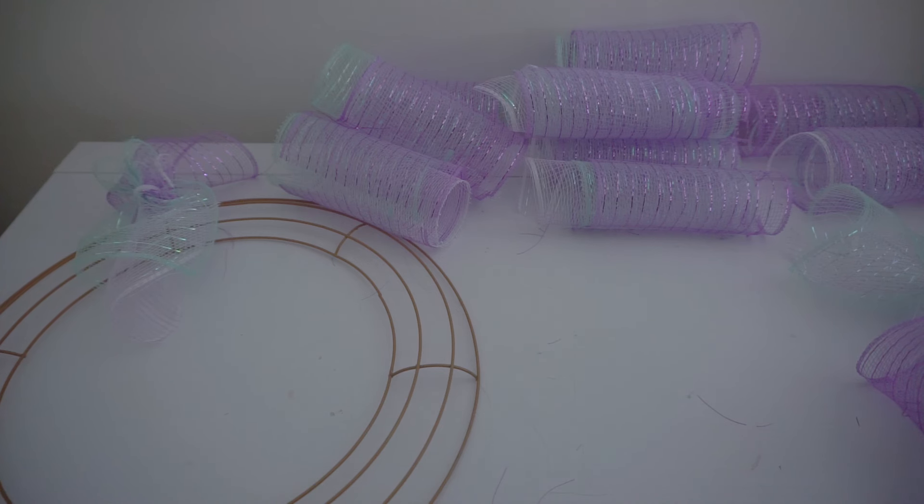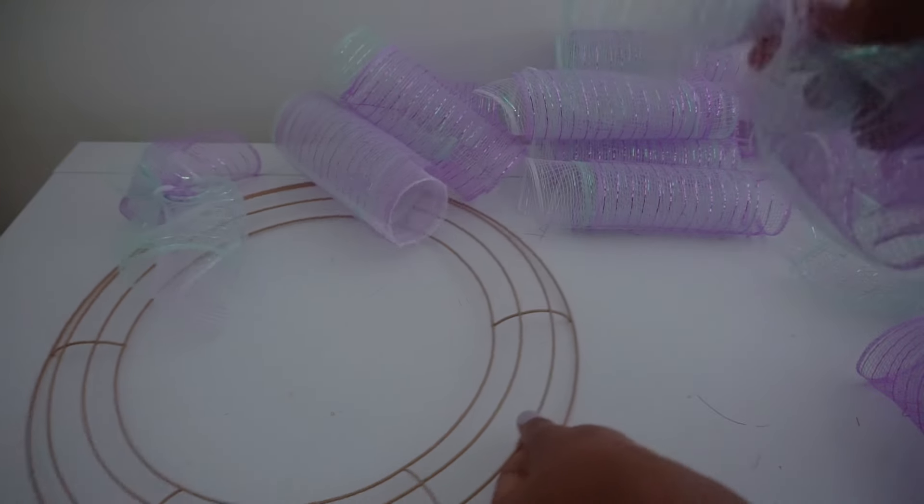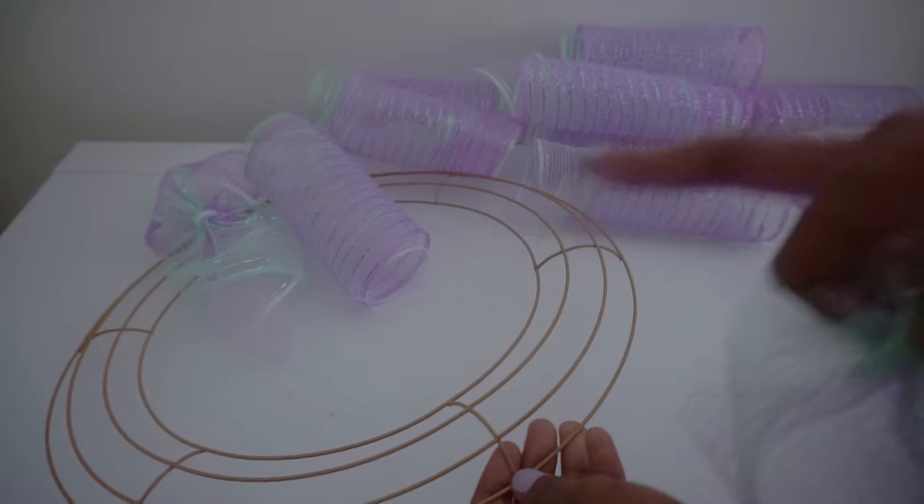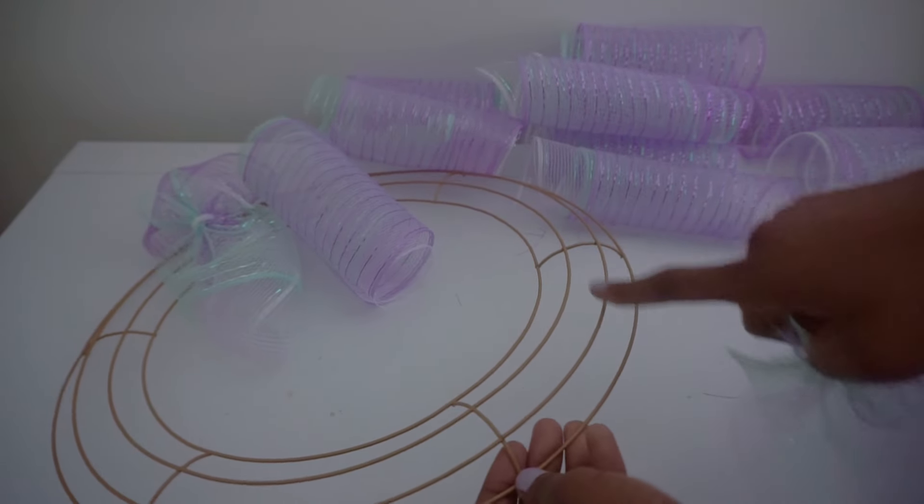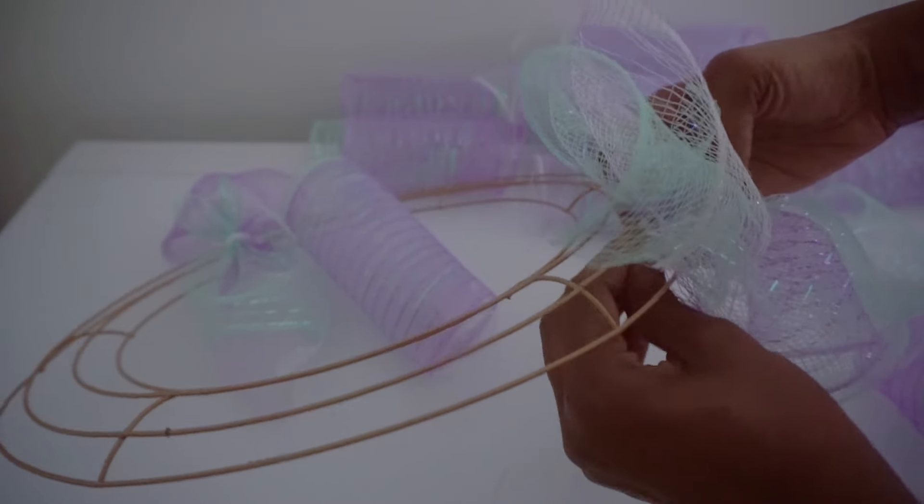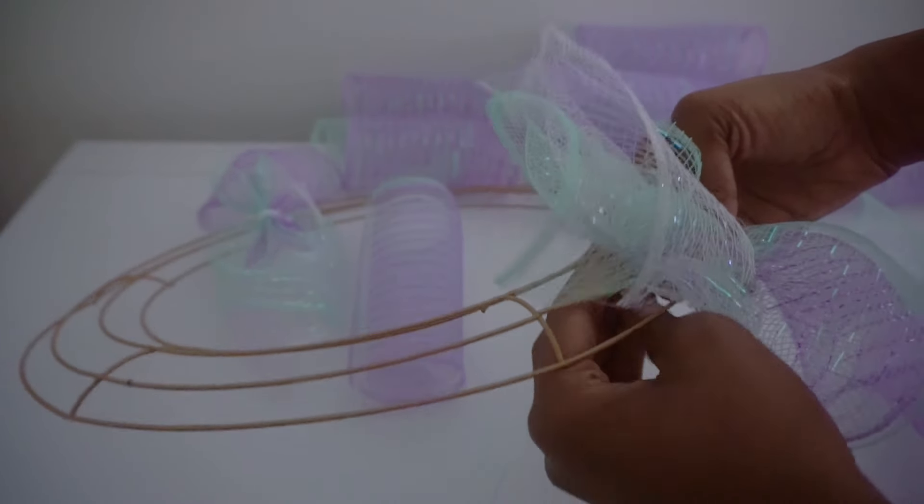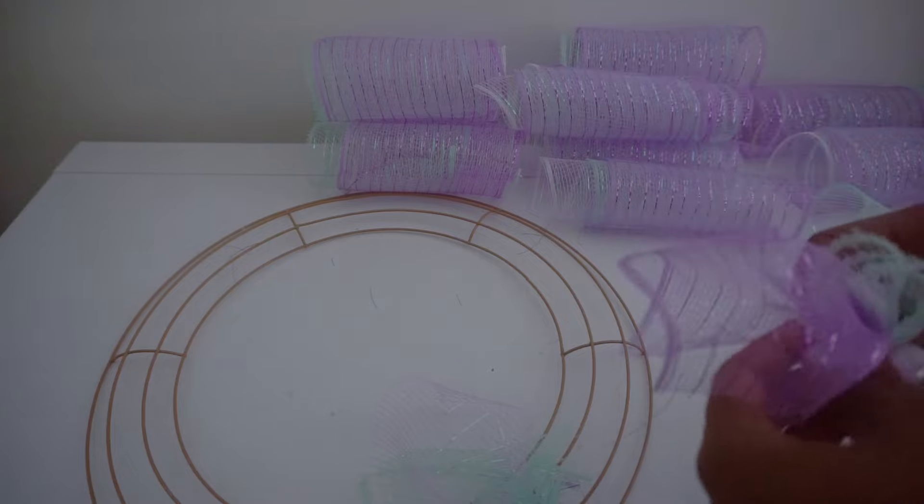But I'm just going to take my bundle and start working with the center two rings. I'm just going to alternate outer, inner, outer, inner. Just going to start with the outer bundle, twist my stem a couple of times and then tuck it away. And then my next bundle will go on the inner ring, twist it a couple of times and tuck it away.